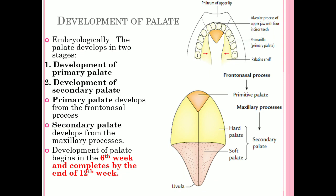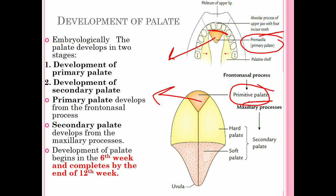The primary palate is the anterior part of the primitive palate, which carries the four teeth — the central and lateral incisors. This part is called the pre-maxilla or primary palate, and it is formed by the frontonasal process. It is also referred to as the primitive palate.